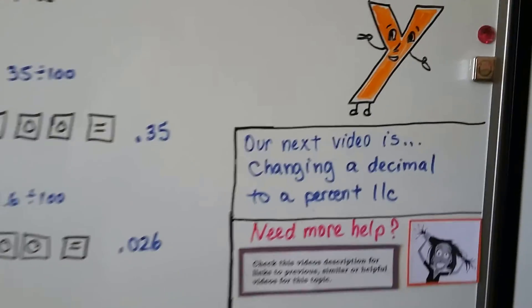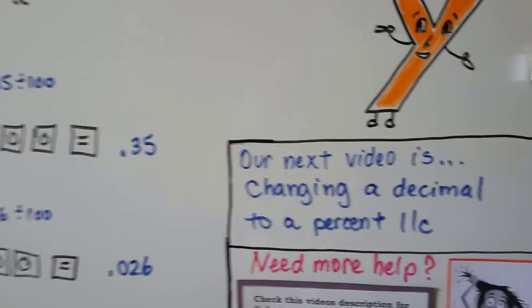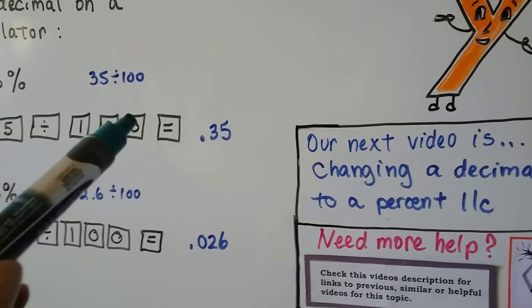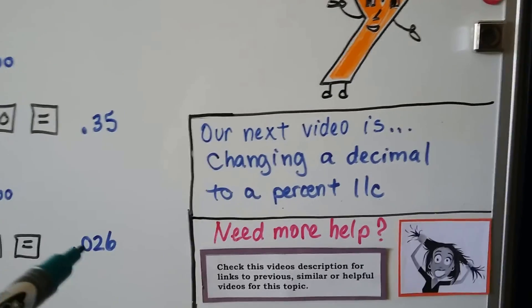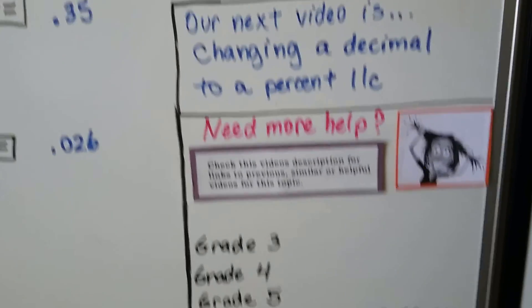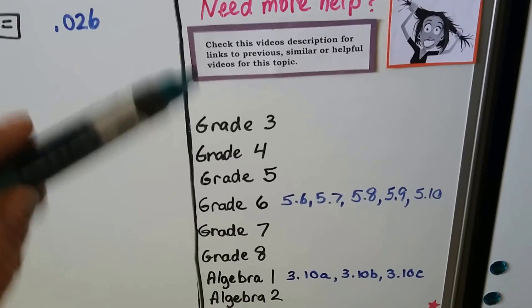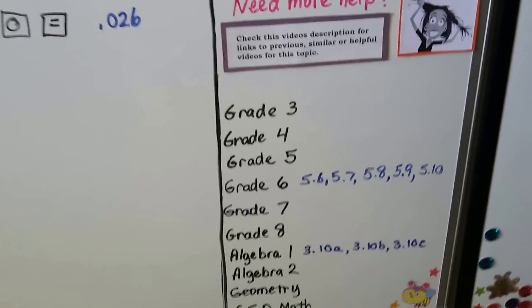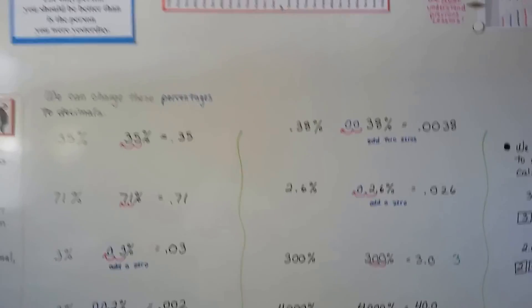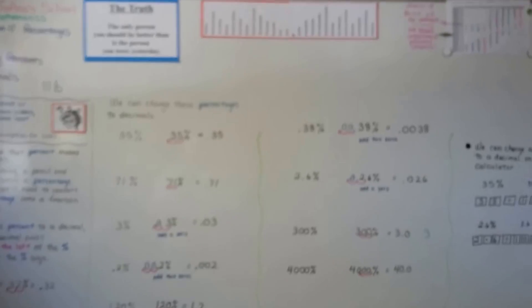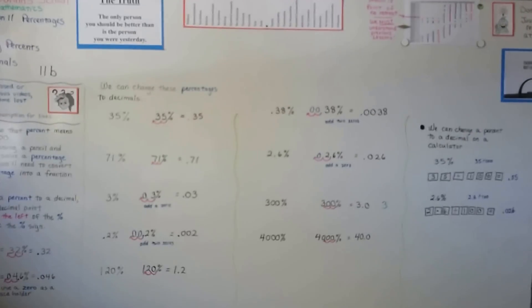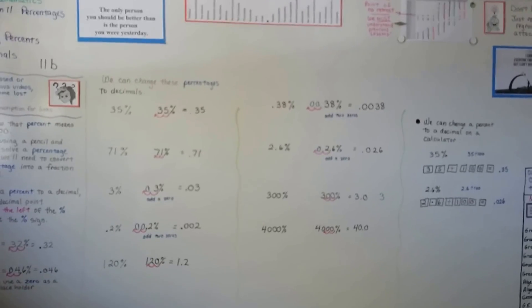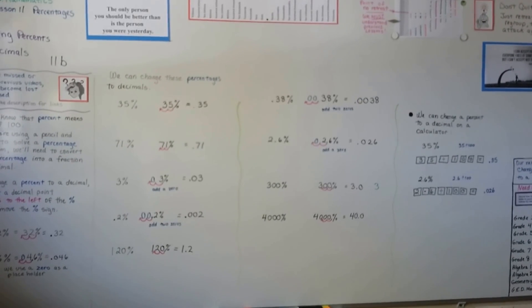Our next video is going to be changing a decimal to a percent. Now, we just did a percent to a decimal. Now, we're going to do decimal to percent and go the other way. That's 11c. And I'm going to have links to these videos in this description to help you. From grade 6 and Algebra 1. I hope you have a great day. I hope you're understanding this with no problem. This seems to be a pretty easy concept, so I think you should be able to get this. I'll see you next time. Bye.